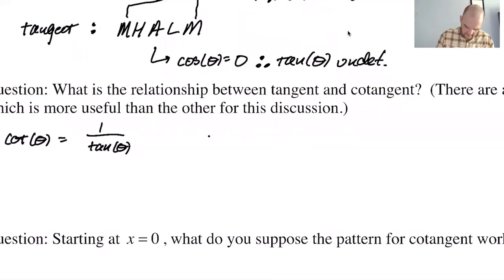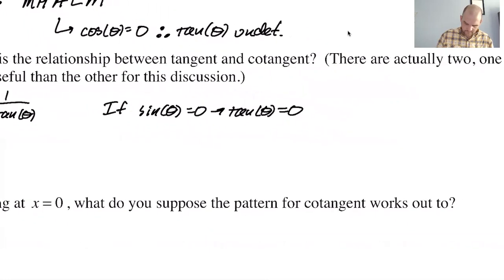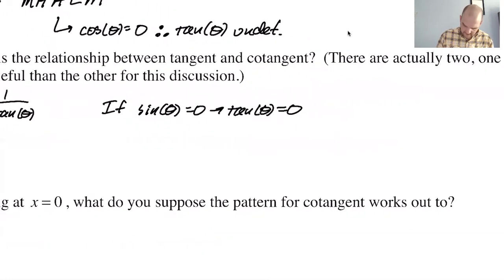So if sine of theta equals zero, that means that tan of theta equals zero. So anywhere that happens, cotangent will be undefined. And this happens everywhere you're at a middle point. You always get the middle points because tangent equals zero, which means for cotangent, those are going to become your asymptotes.